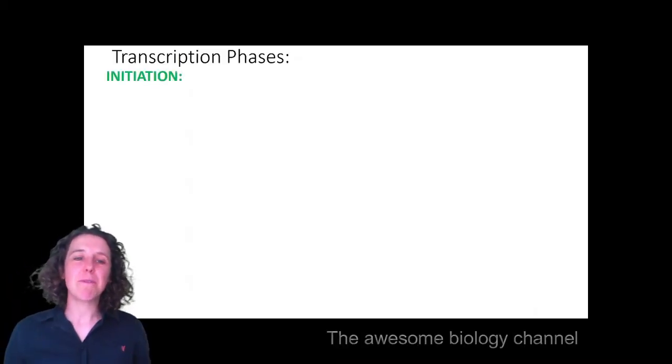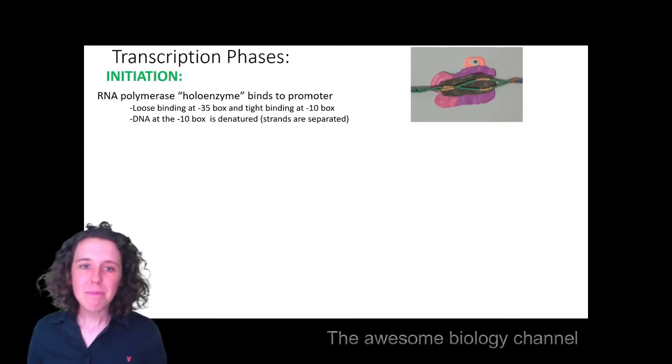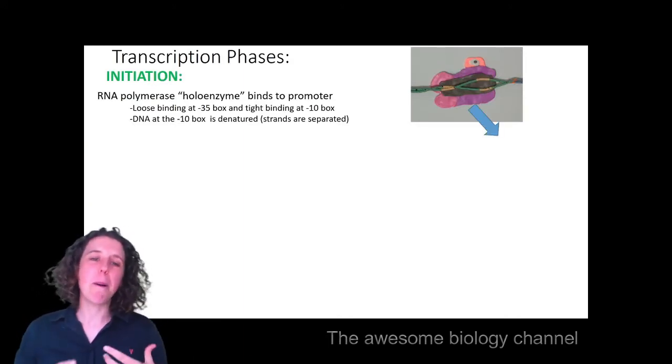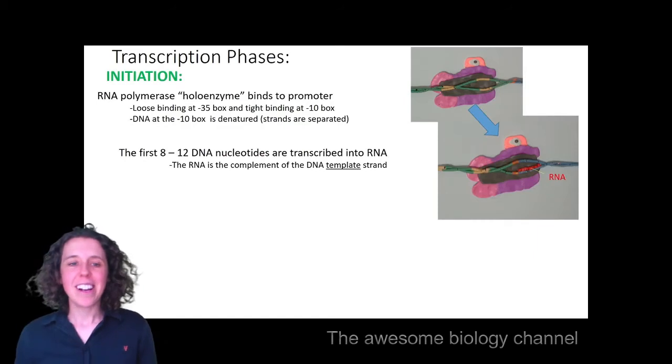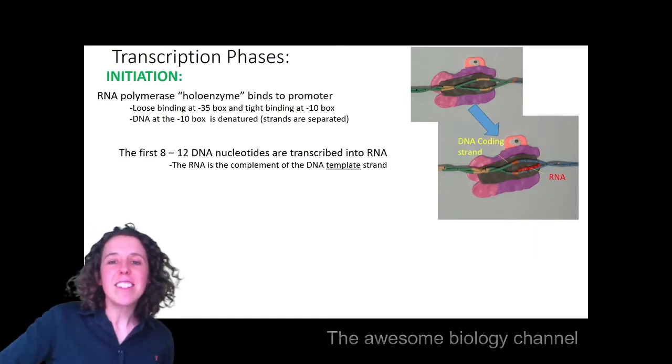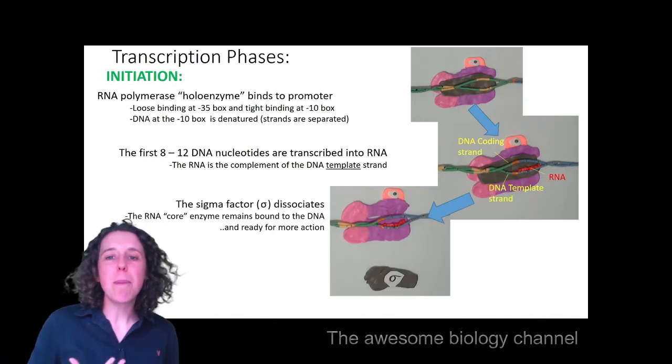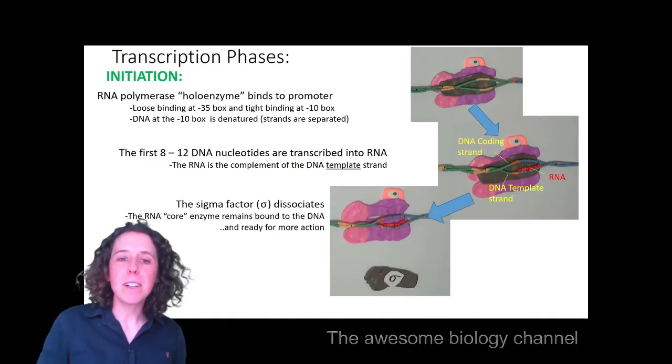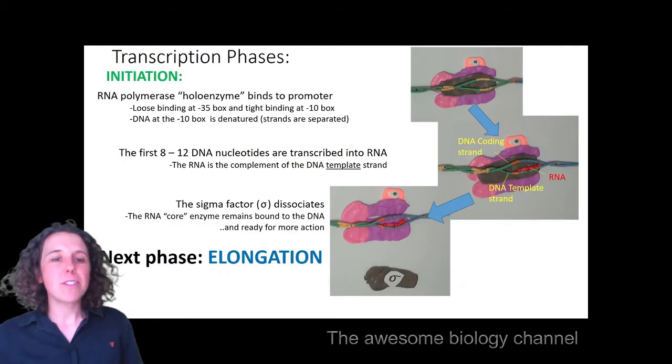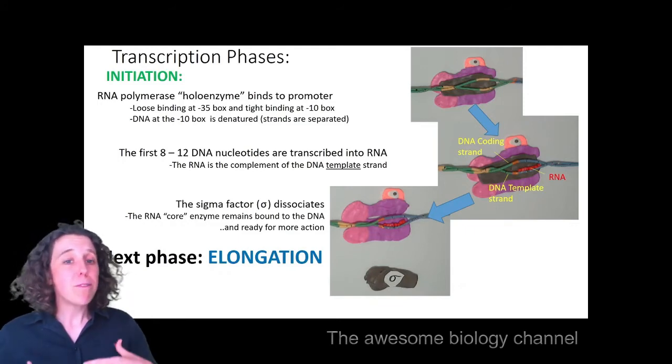So our initiation phase that we've just seen, it starts with that holoenzyme binding to the promoter. Inside his little body, he's going to pull that DNA apart, and he's going to transcribe RNA as a complement of the template strand. Once it's done about 8 to 12 nucleotides, the sigma factor will fall off.